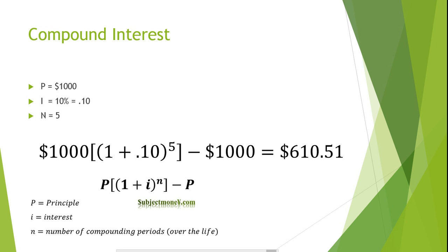Our principal is $1,000, our interest rate per compounding period is 0.10 or 10%, and the number of compounding periods is five years. Plugging these values into the formula, we find that we've earned $610.51 in interest. If this same investment earned simple interest, you would have only earned $500 in interest, which is $110.51 less.